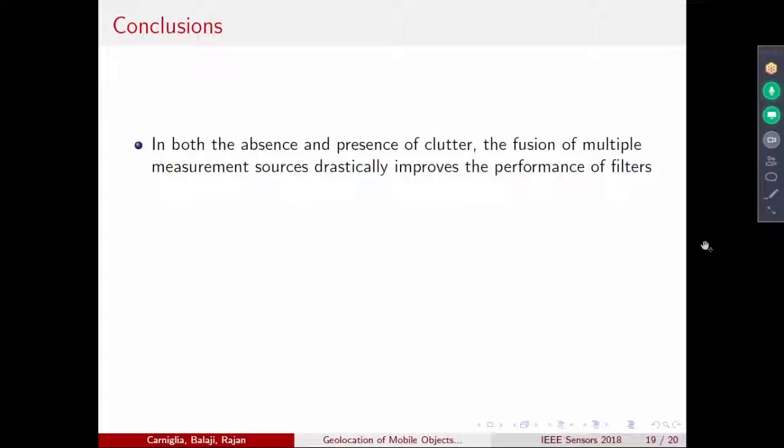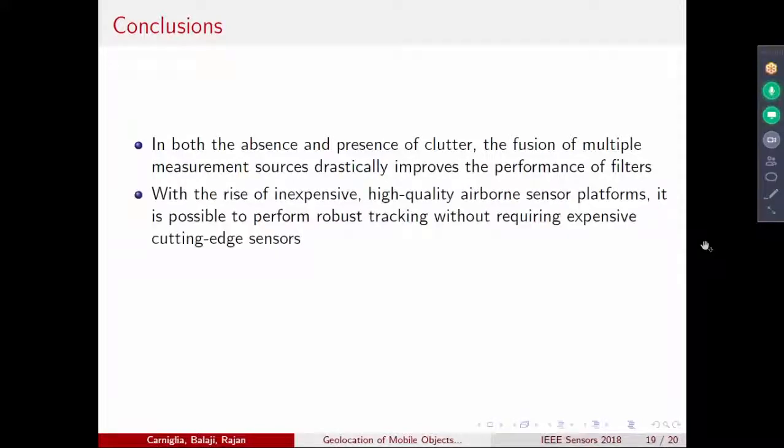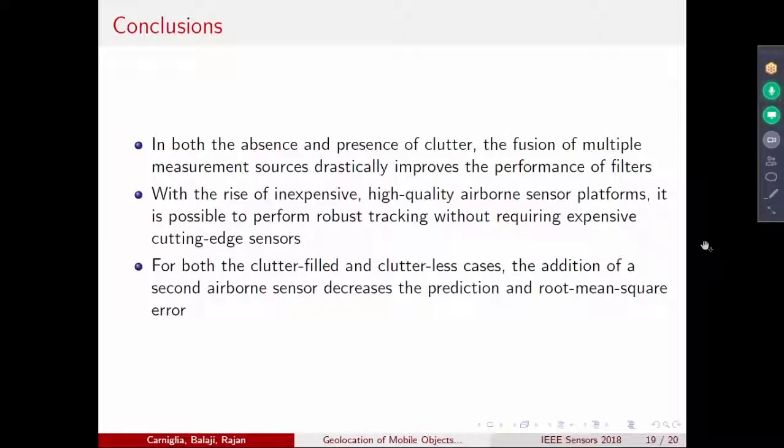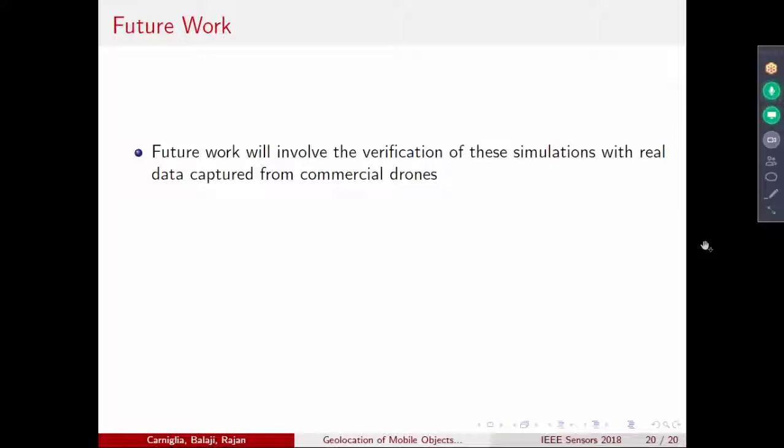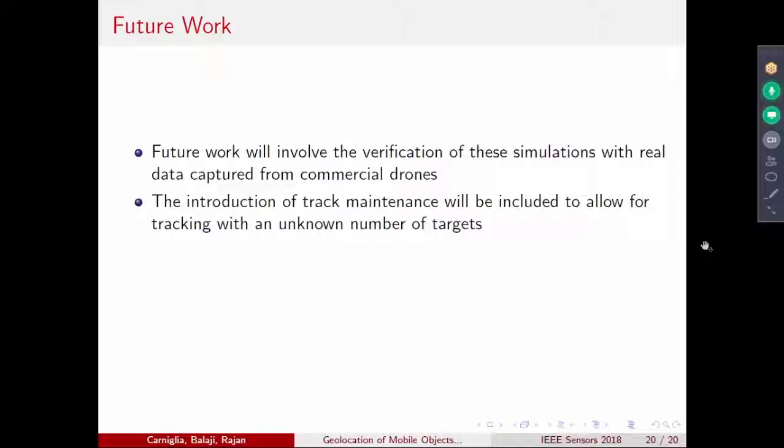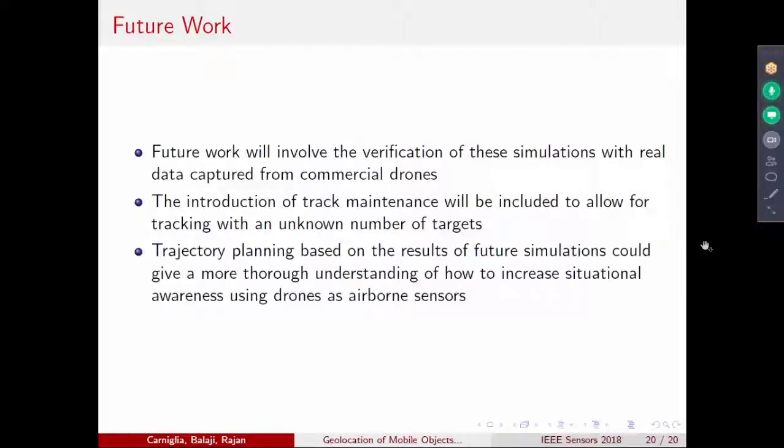In conclusion, irrespective of the presence of clutter, the fusion of multiple measurements drastically improves the performance. You will be able to do this without requiring expensive cutting-edge sensors like radars. You can decrease the errors. The future work would be to do it with commercial drones, and we have already done that, and also using track maintenance with more number of targets and using the idea of compressive sensing. That's all. Thank you.